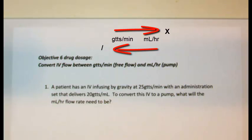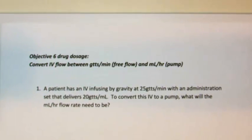In this first problem, a patient has an IV infusing by gravity at 25 drops per minute with an administration set that delivers 20 drops per milliliter. To convert this IV to a pump, what will the milliliter per hour flow rate need to be?